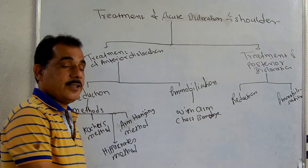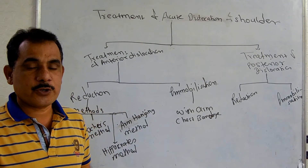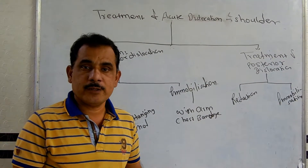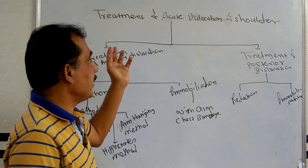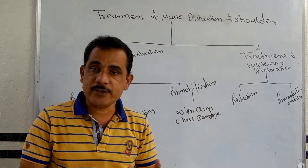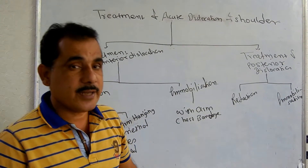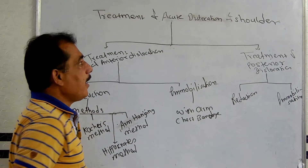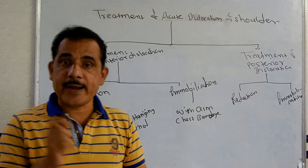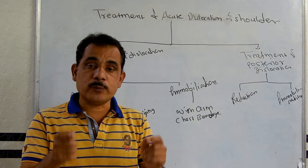Hello friends, welcome to today's lecture on surgery. In today's lecture we will discuss the treatment of acute dislocation of the shoulder. In the last lecture we discussed the dislocation of the shoulder, its types, anterior and posterior dislocation in detail, including its definition, etiology, clinical features, and complications. Now in today's lecture we will see the treatment of the acute dislocation of the shoulder, which should be carried out as early as possible.